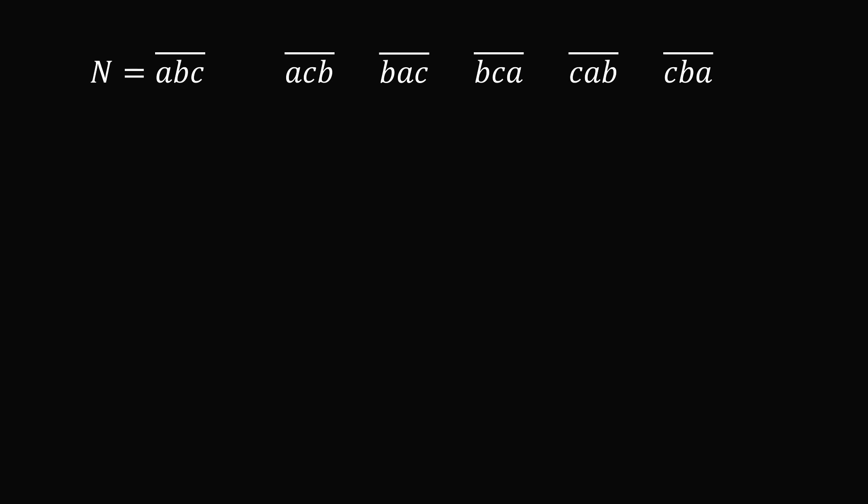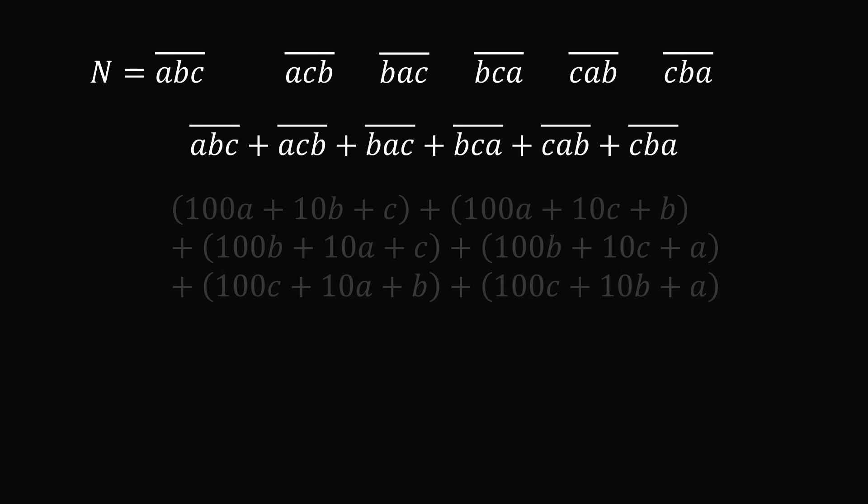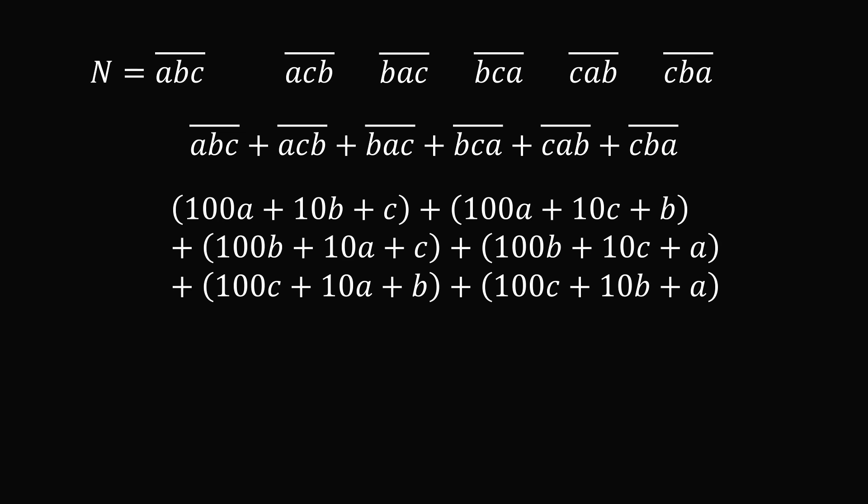Now the way I approached the problem was to consider the sum of all six of these numbers. Let's write out this sum in long form. Now ABC is a short form of the number 100A plus 10B plus C. We can write out each of these numbers in long form. Now let's color code this sum by each different variable. So let's put all the terms with A in blue, all the terms with B in green, and all the terms with C we'll leave them in white.